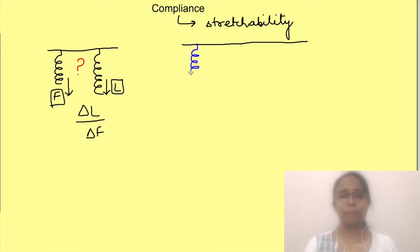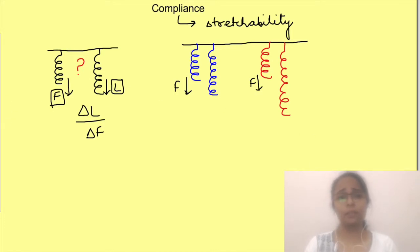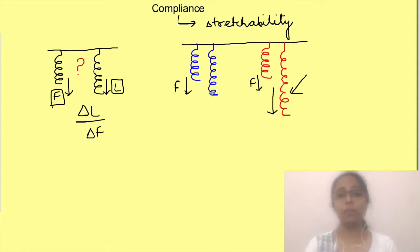Let's take an example of two different springs. If we apply the same force to pull both, the blue spring stretches a certain length while the red one stretches more. The red one is more compliant since the change in length per unit change in force is greater for it. So we say the red spring is more compliant than the blue spring.